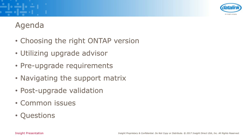Navigating the support matrix — this is probably the single most important part of a clustered ONTAP upgrade, making sure that everything within your environment is supported before and after the upgrade. Post-upgrade validation — just what should you look at to make sure the environment is healthy once you've completed everything. Some common issues that we see, and any questions you have — feel free to ask during the presentation and we'll answer as quickly as we can. If it's something we can't get to right away, we'll follow up after the fact.